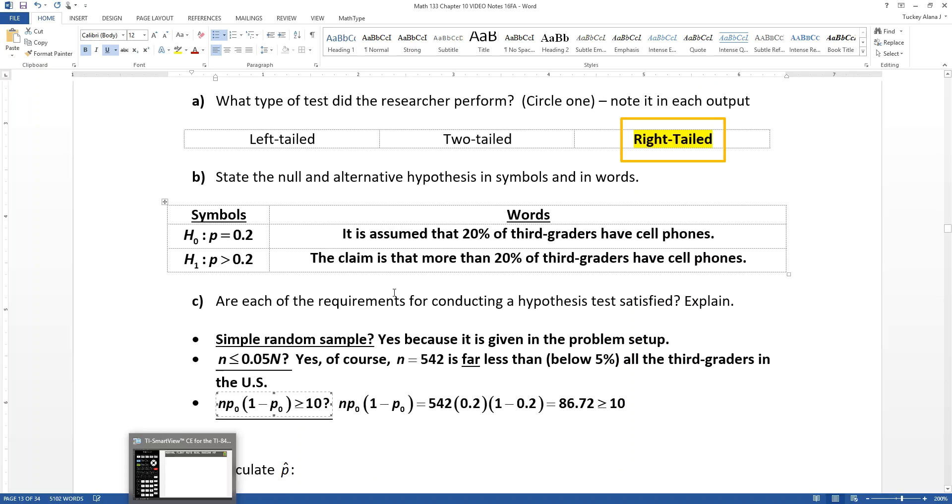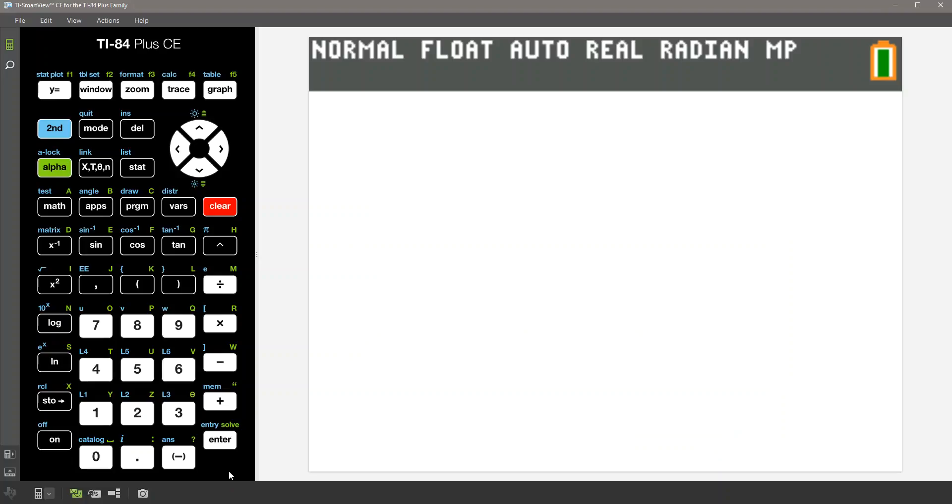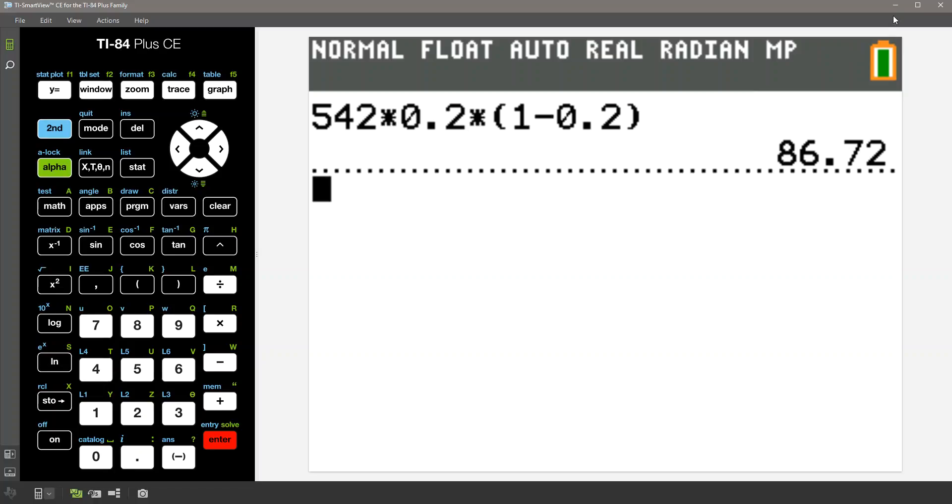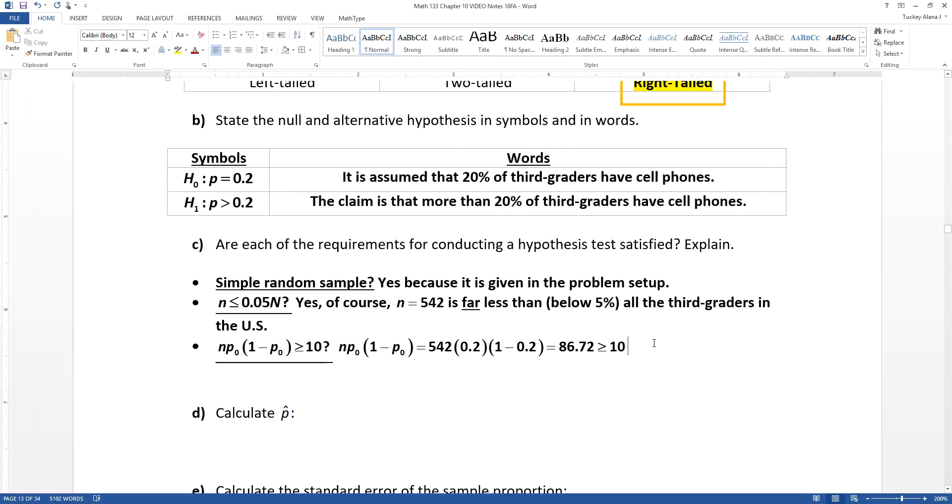Well, N, if you recall, up at the top was 542. P0 is your null hypothesis value of 0.2. So we take 542 and we multiply it by 0.2 and then times it by 1 minus 0.2. And we get 86.72, which is well above the threshold of 10. So we are happy, right? So this is a yes.